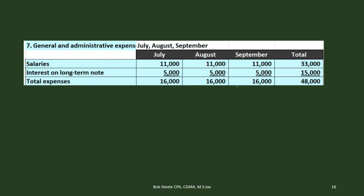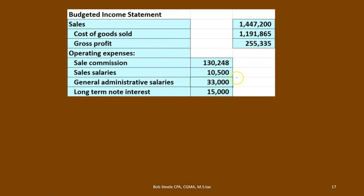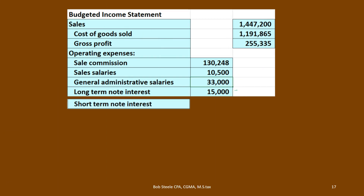Then we have the general and administrative salaries and the long-term note interest, and we pull those from the general and administrative budget. That one we did total up — 33,000 for the general administrative salaries and 15,000 for the long-term note interest. We're summing up the full quarter — the three months — so here's the 33,000 and the 15,000.